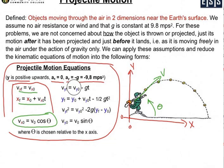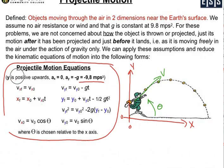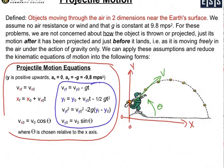Now talking about the y direction: we do have an influence of acceleration, which is g. So we take our kinematic equations and look at only the y direction — it reduces to those equations. The y component of velocity is going to be the sine of your theta degrees, which is your angle off of the x axis. In most courses your teacher will provide you with these equations and you need to get proficient in using them.